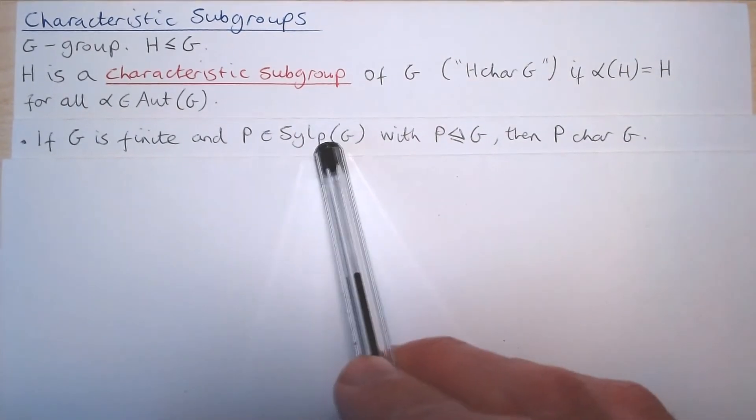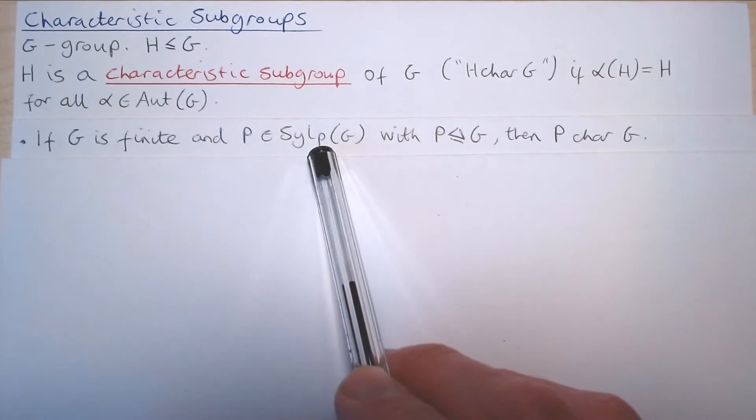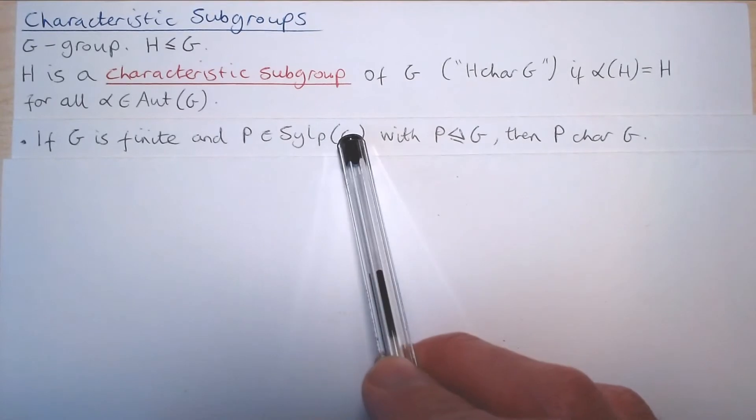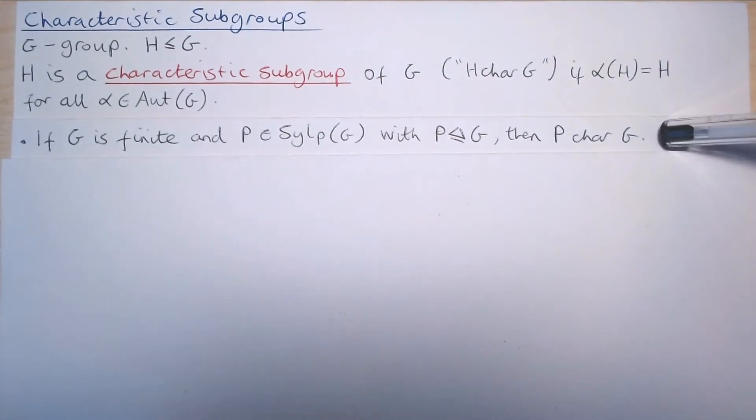Recall that a Sylow P-subgroup of G, for some prime P dividing the order of G, is the largest subgroup of G of order P^R for some R at least 1.